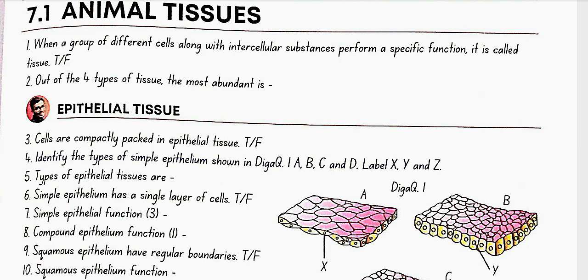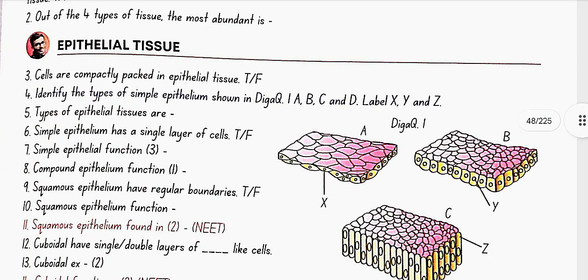Epithelial Tissue: Cells are compactly packed in epithelial tissue. Yes, this is true. Identify the types of simple epithelium shown in Diagram 1 A, B, C, and D, label X, Y, and Z.